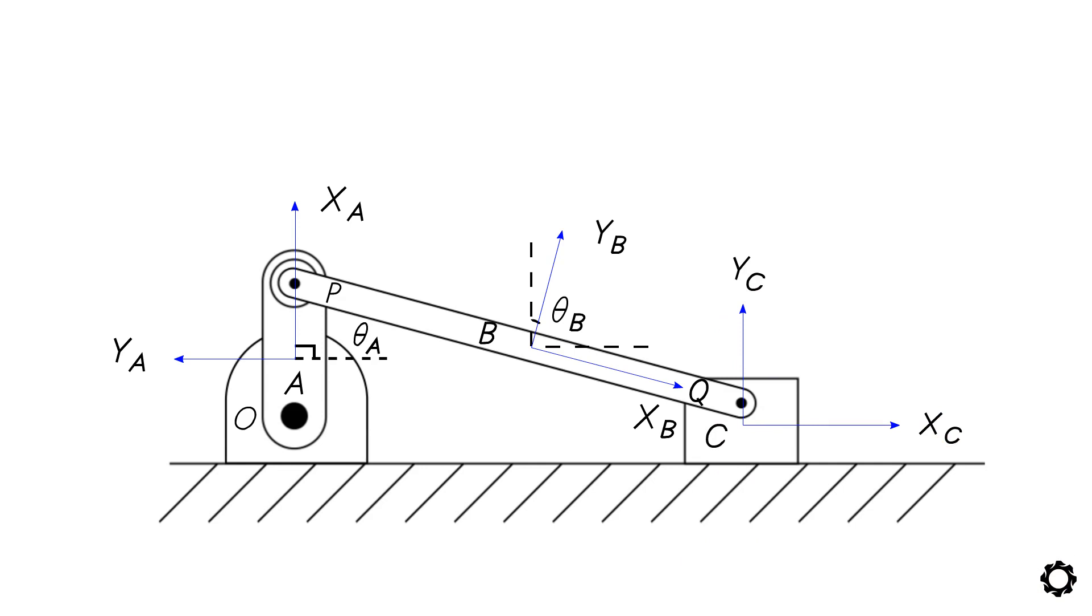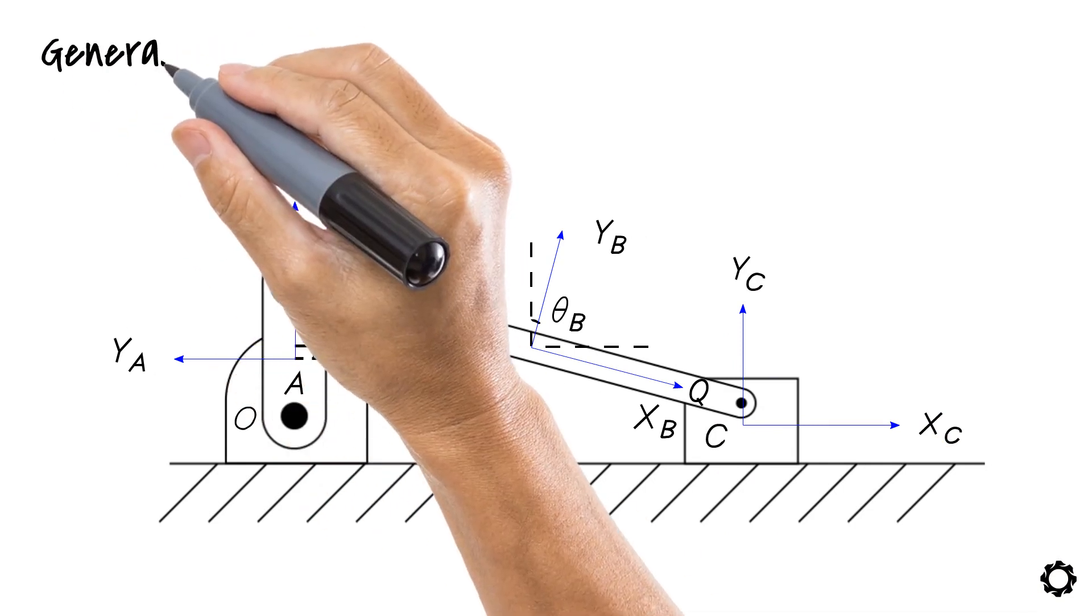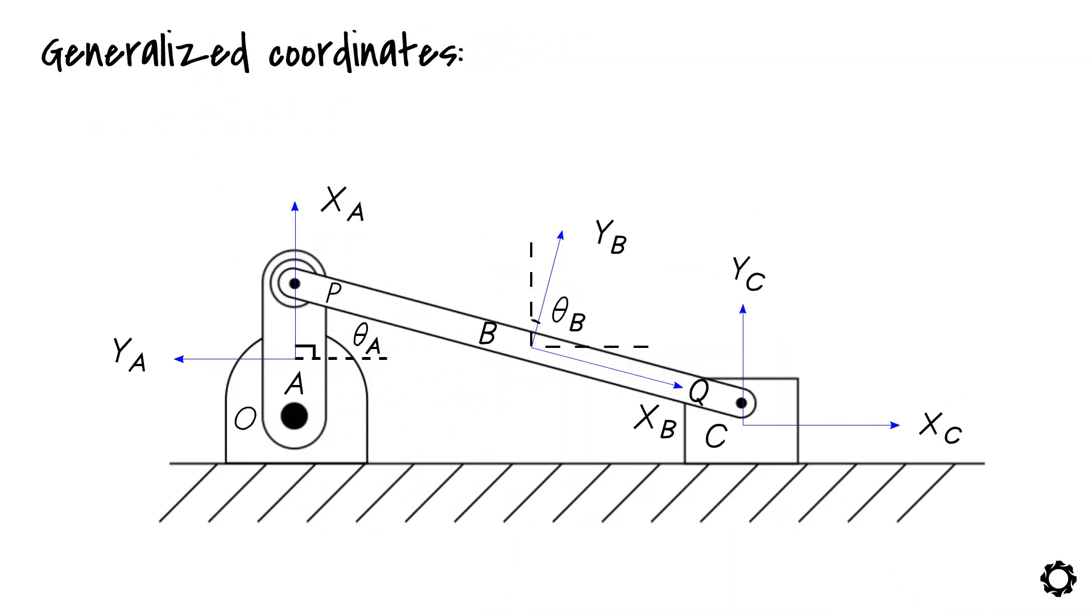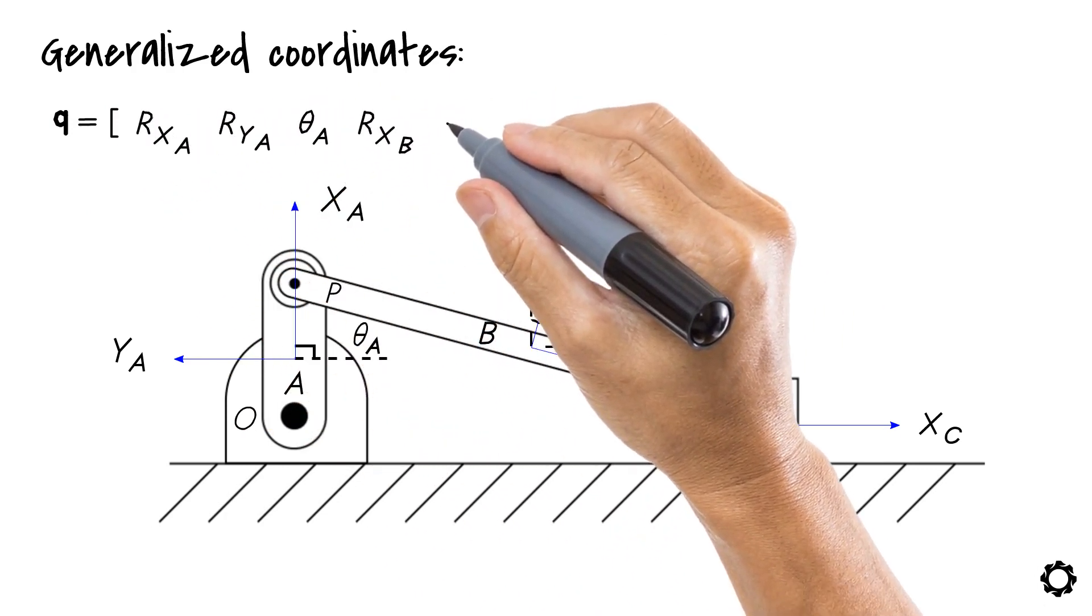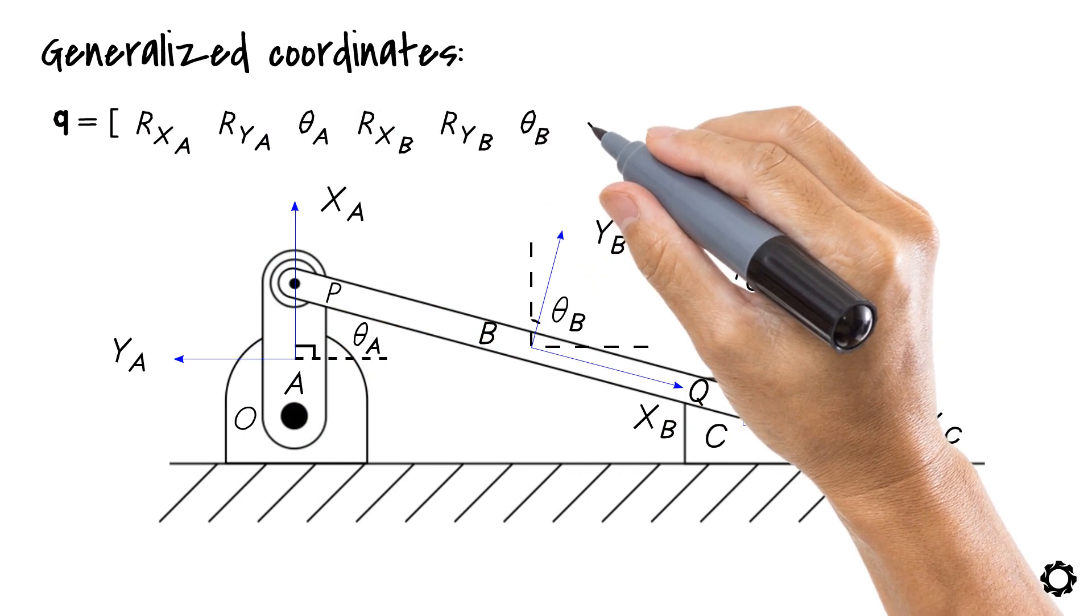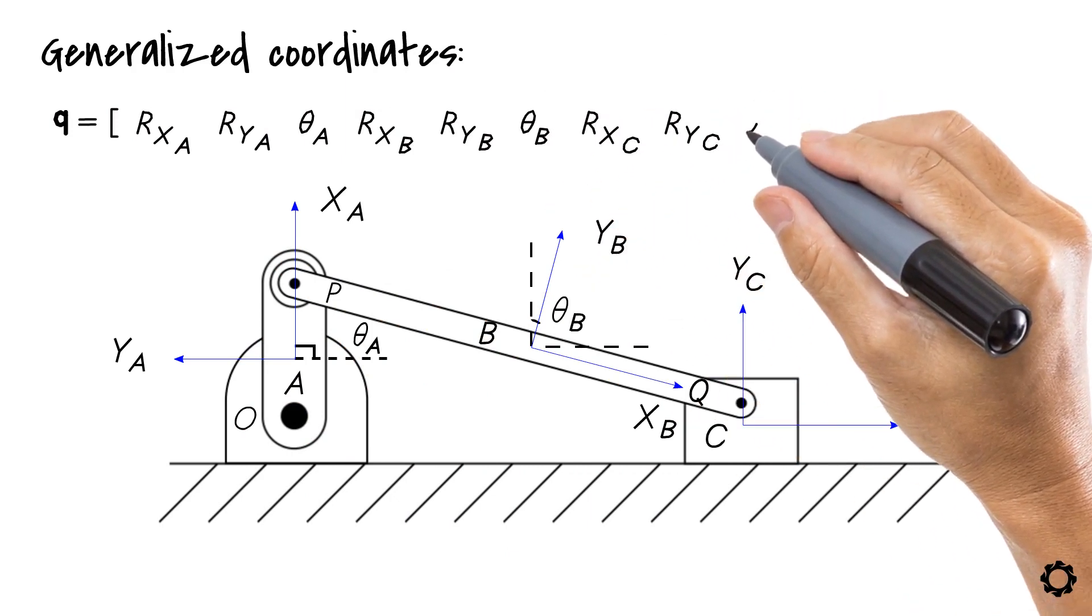Now, it would also be a convenient time to write the vector of generalized coordinates. This can be written as Q equals RxA, RyA, ThetaA, RxB, RyB, ThetaB, RxC, RyC, ThetaC transpose.